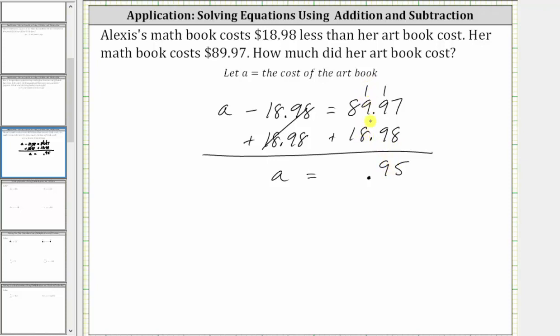One plus nine plus eight is 18, record the eight, perform an exchange with the one. One plus eight plus one is 10. We now know the art book cost $108.95. I hope you found this helpful.